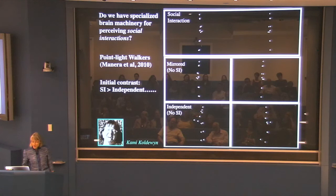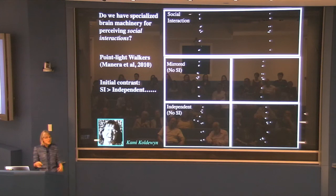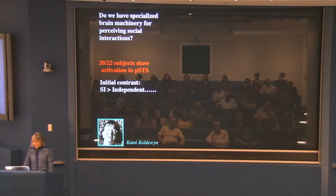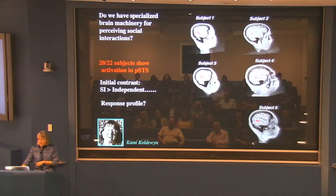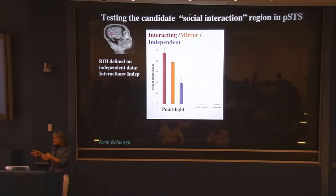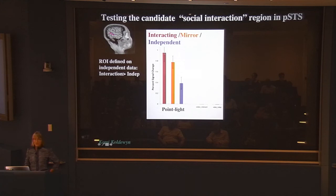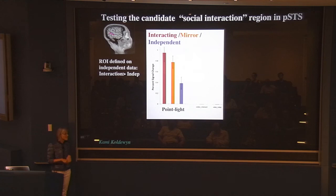We scanned people looking at these video clips and looked for a contrast between the social interaction case and the independent actions case — both involving two point light walkers doing activities. In 20 out of 22 subjects, we found an activation in a particular region of the superior temporal sulcus. That's pretty good for a random new thing you try — usually you don't see something systematic like this. Defining that region from some data and measuring its response in left-out data, you see a strong response to interacting point light movies, much lower to independent activities, and intermediate for the mirrored condition — which reflects my subjective sense of the strength of perceived interaction.